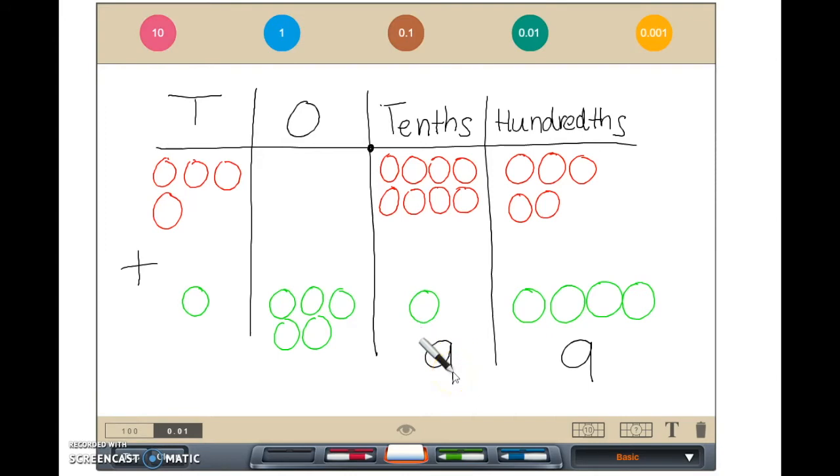I will continue on the ones place. One, two, three, four, five, five circles in the ones place. And finally the tens place, one, two, three, four, five, five circles in the tens place.